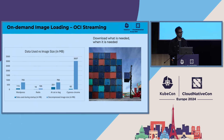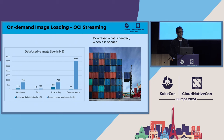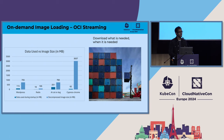This is the core observation that many open source solutions use to address this problem: you can download what data is needed, when it is needed. Open source projects like OverlayBD, Soci, NYDUS, and eStargz are some of the main projects that address this. The main differences between these projects are the type of block device or virtual layer they access, the way the image is converted, and the decompression algorithms they use — but all of them rely on this core insight.